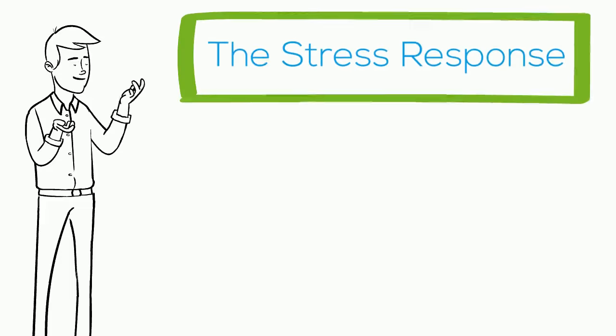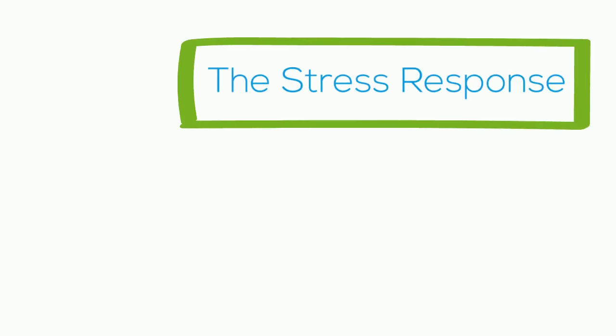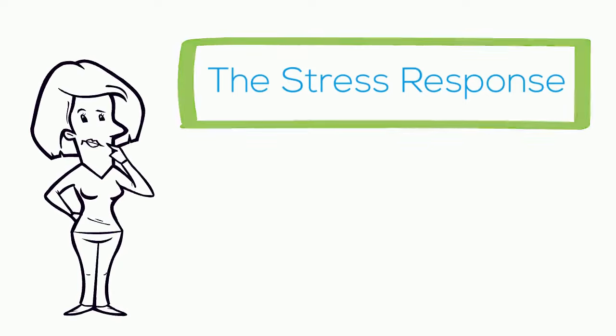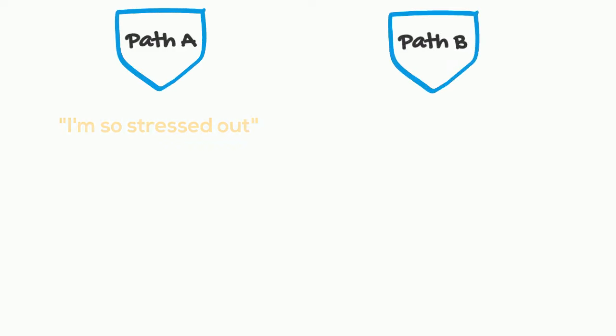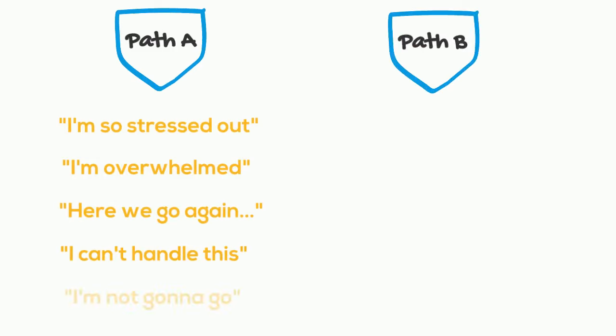Now let's go back to when we first experienced the stress response. This is when we're at an important point where we can choose how we interpret those physical sensations. Let's call them path A and path B. On path A, we can think, I'm so stressed out. I'm overwhelmed. Here we go again. I can't handle this. Or I'm not going to go.